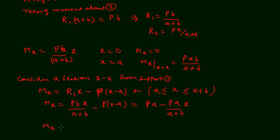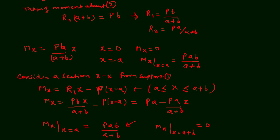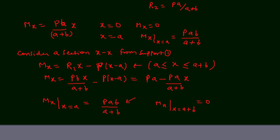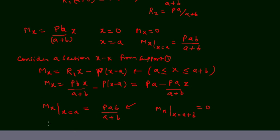At x = a, Mx = Pab/(a+b). At x = a+b, Mx = 0. We get the same result at x = a from both regions, confirming that the bending moment at the point of application of load, or at point a, is Pab/(a+b), and this is also the maximum bending moment.